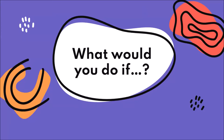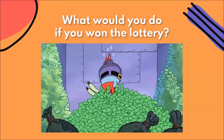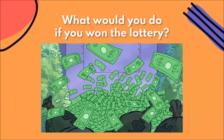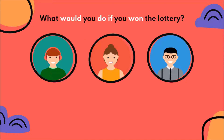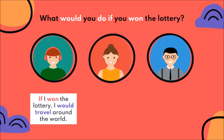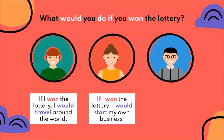Hello kids, welcome back! Today we are going to start with a new topic called the second conditional. Please pay attention. First, I'm going to start by asking you some questions. What would you do if you won the lottery? Here we have three people that are going to answer this question. The kid says: if I won the lottery, I would travel around the world. Then the woman says: if I won the lottery, I would start my own business.